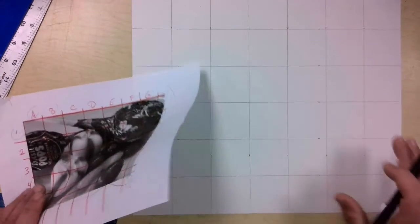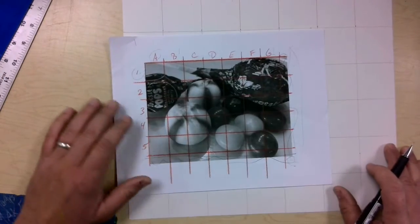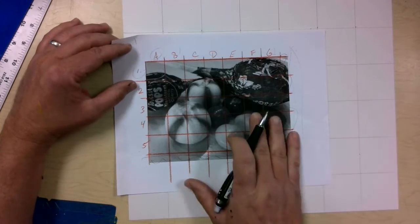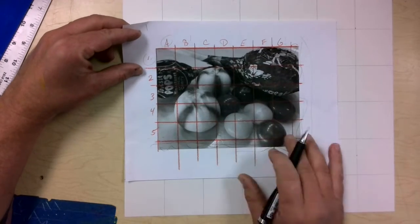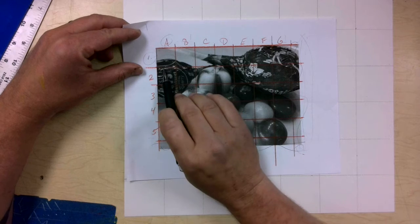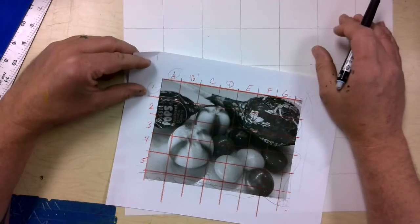All right, so now that we have our paper as a grid, we're going to come back to our picture that already has a grid on it. This grid is one by one, and this is two by two.